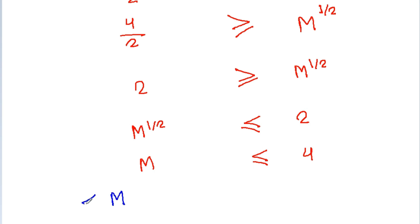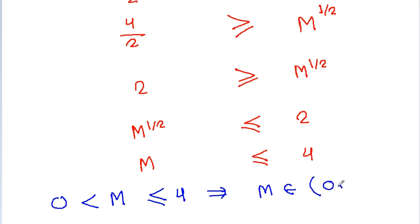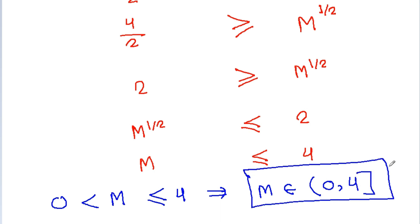So m will be less than or equal to 4, meaning m belongs to the interval open 0 to close 4, i.e., (0, 4]. Thank you.